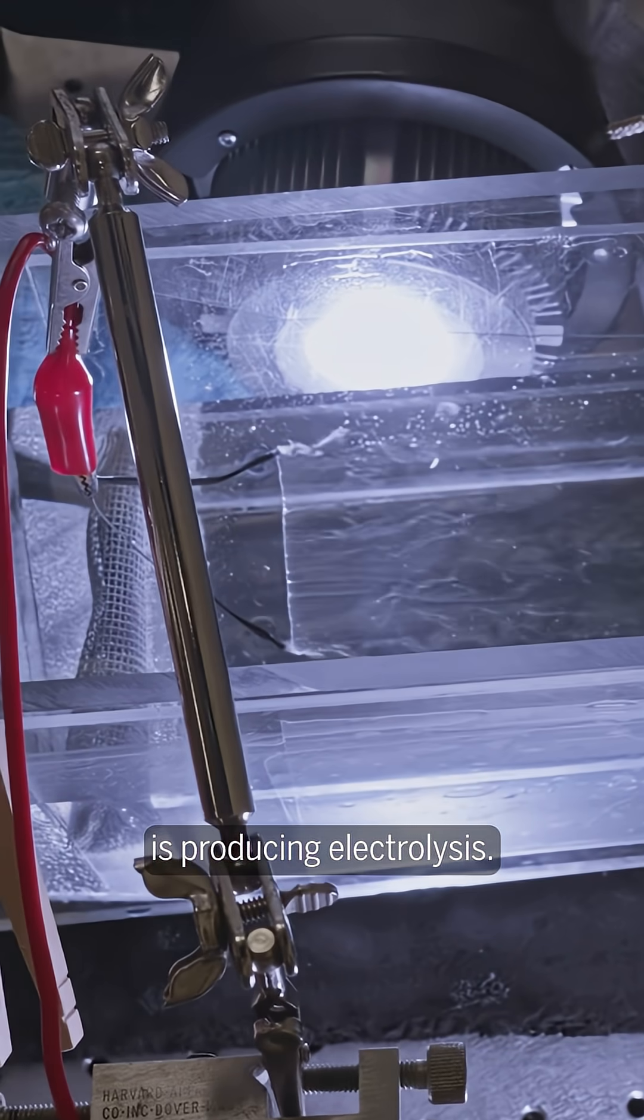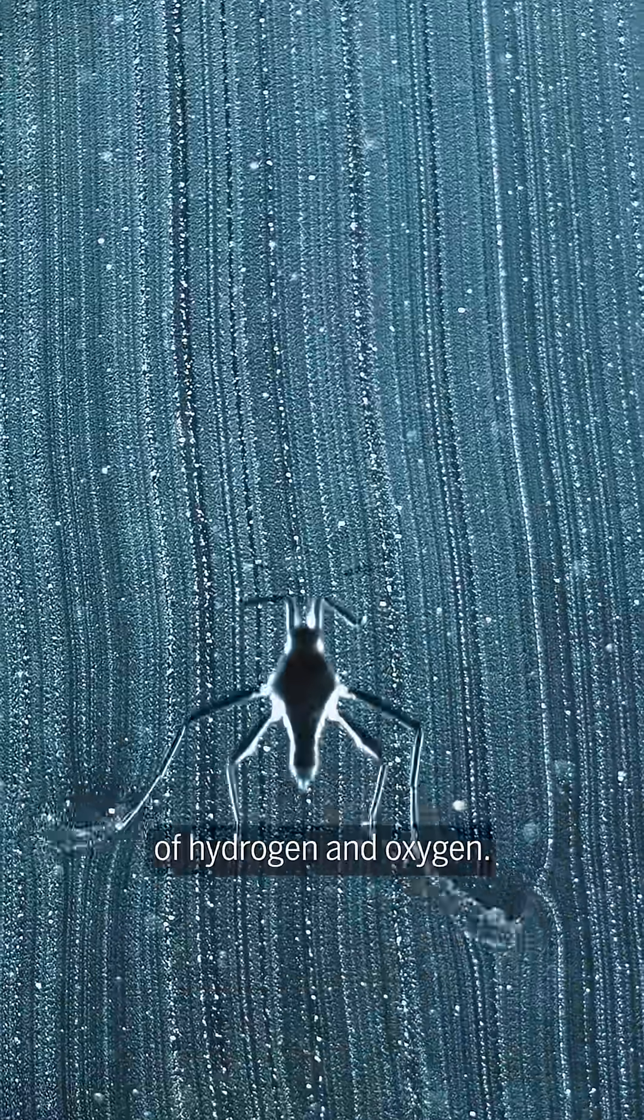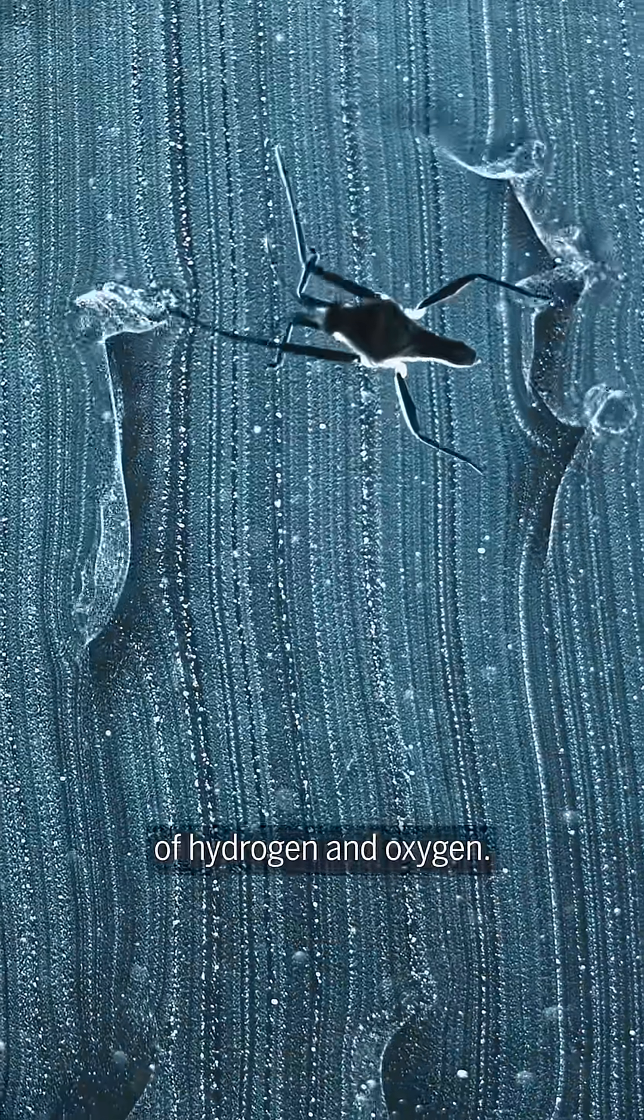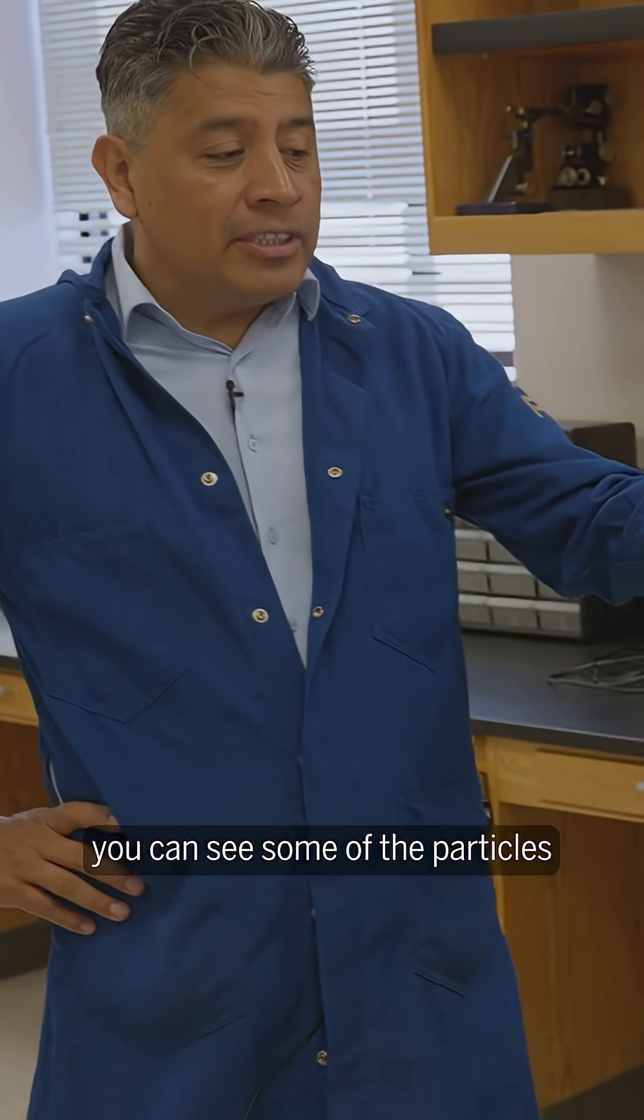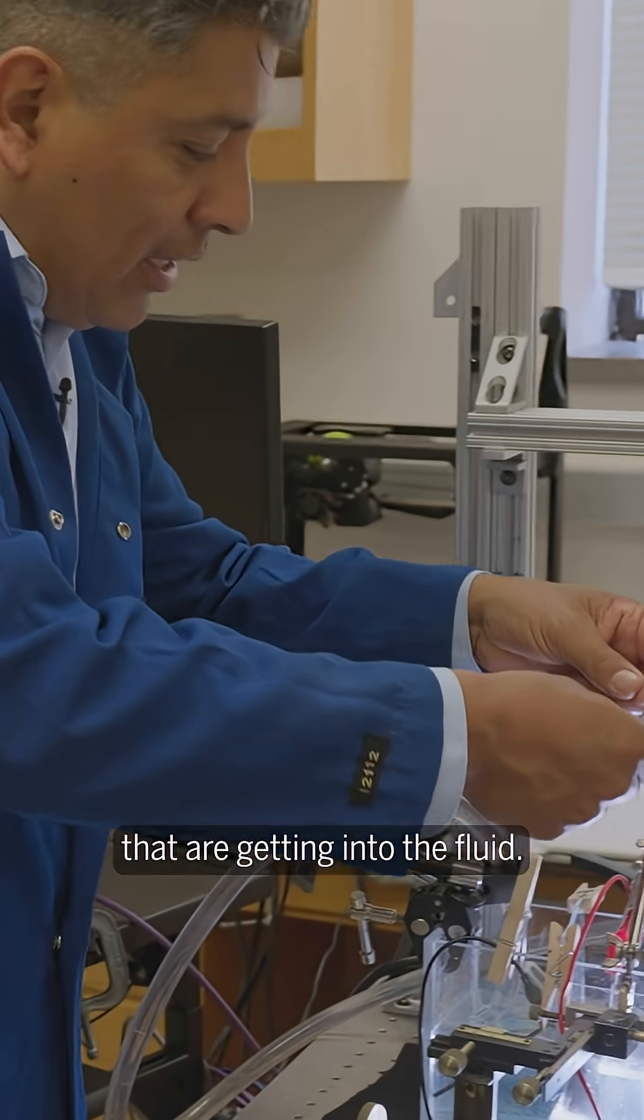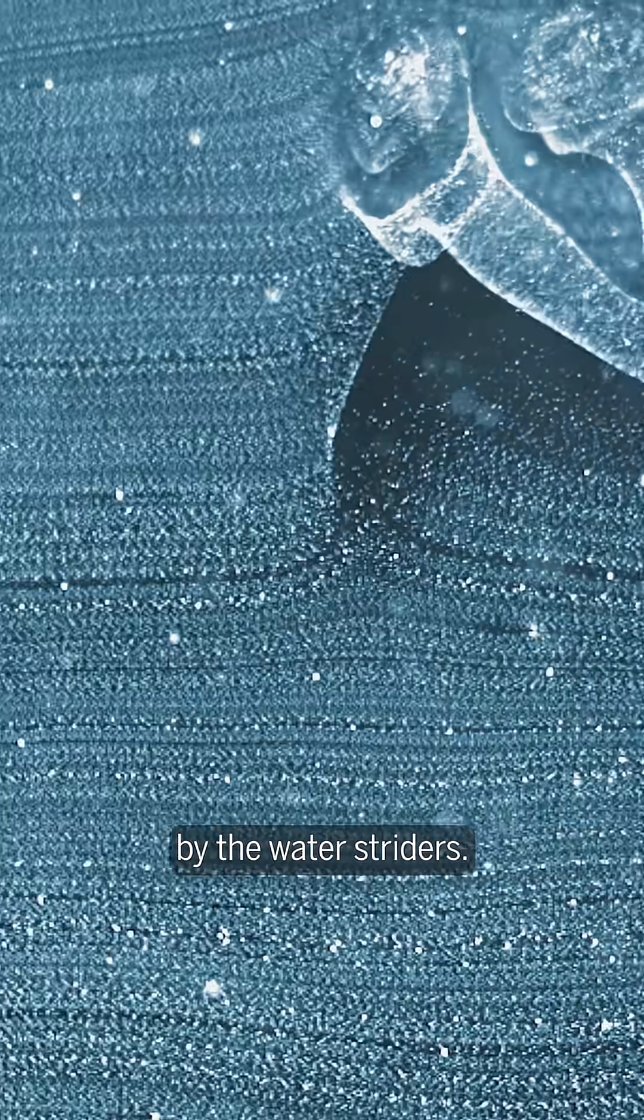We are producing electrolysis, breaking water molecules to produce small bubbles of hydrogen and oxygen. By doing that, you can see particles getting into the fluid, and we can visualize the vortices produced by the water striders.